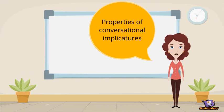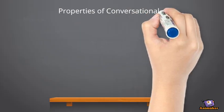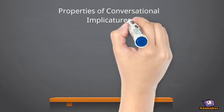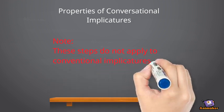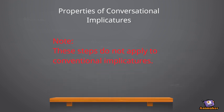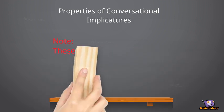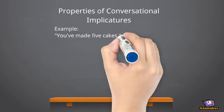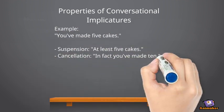The next implicature is the properties of conversational implicature. It is based on the assumption of the speaker's cooperation and use of maxims. These properties can be calculated, suspended, canceled, or reinforced. So in our example, the speaker can deny or reinforce the meaning of the implicature: suspension, cancellation, reinforcing.